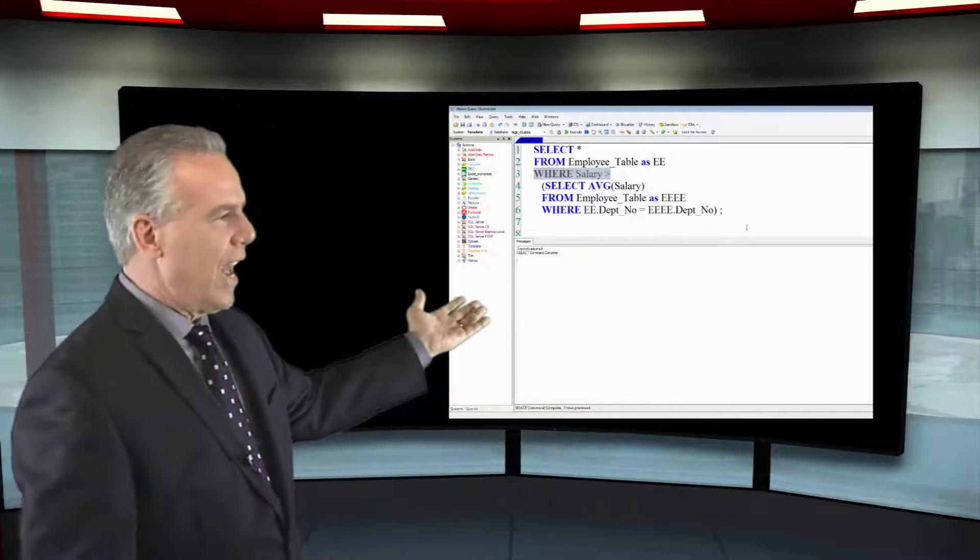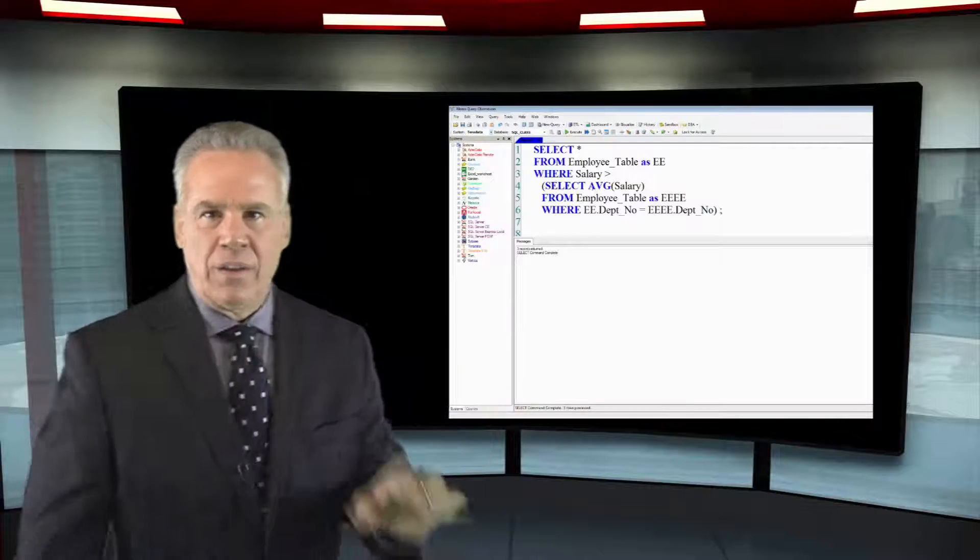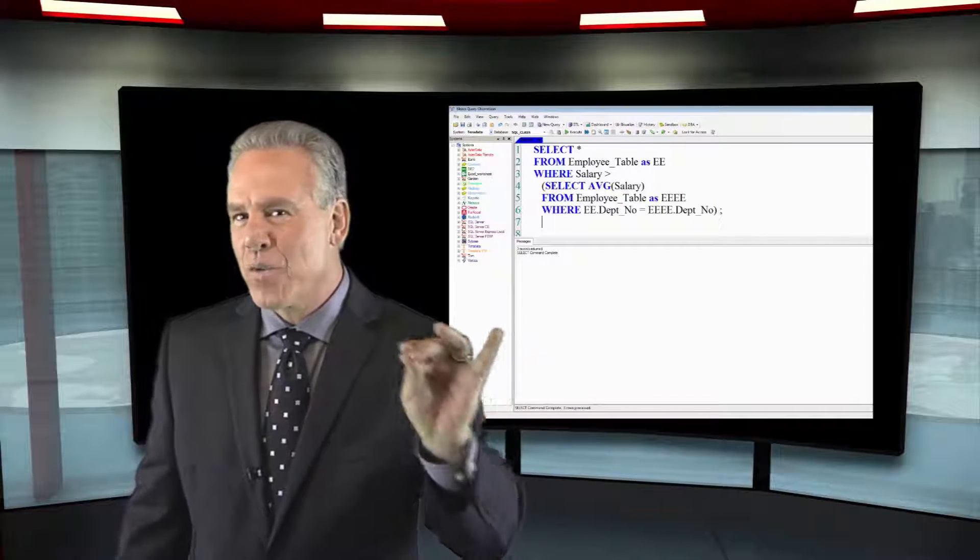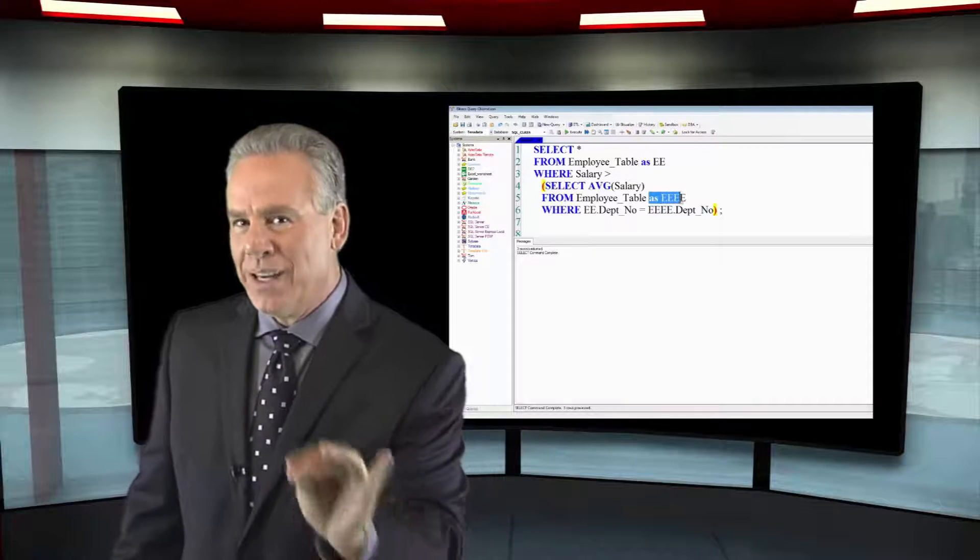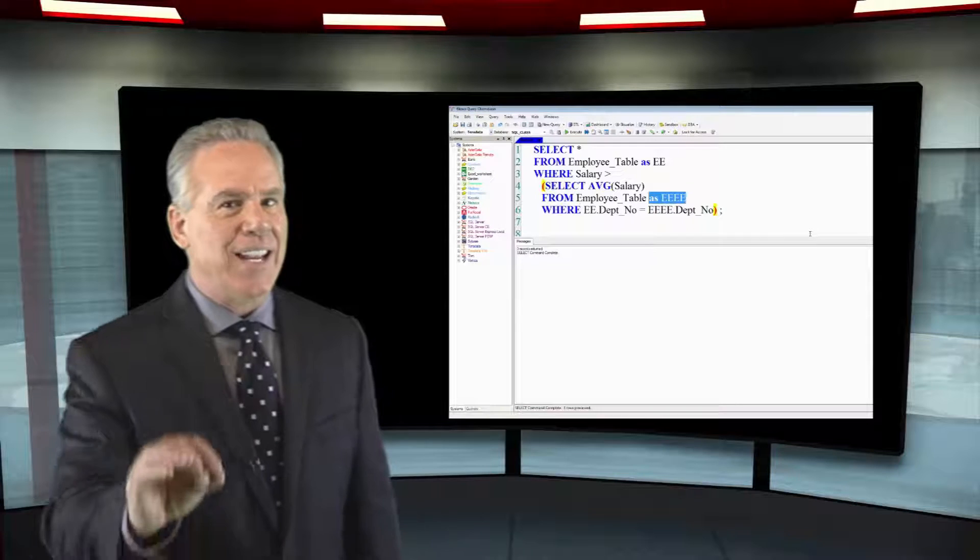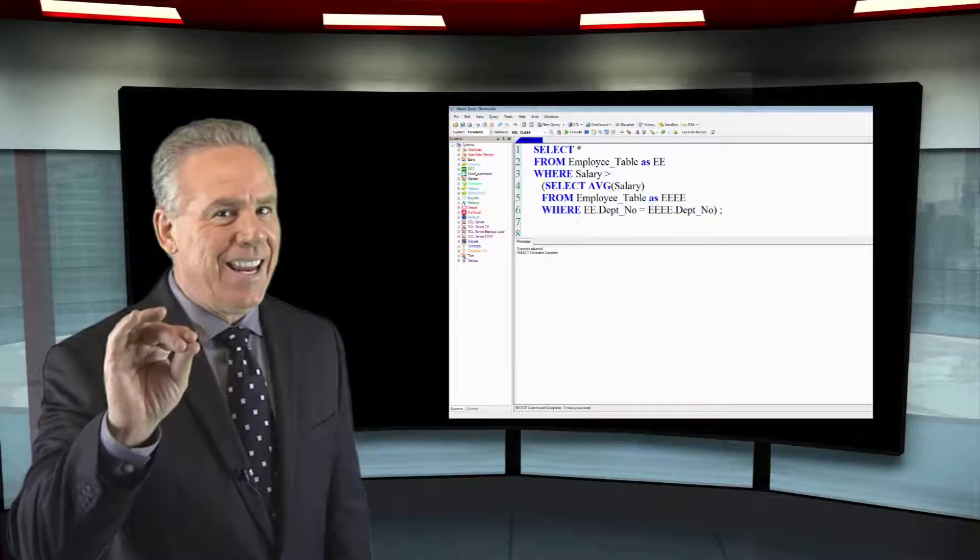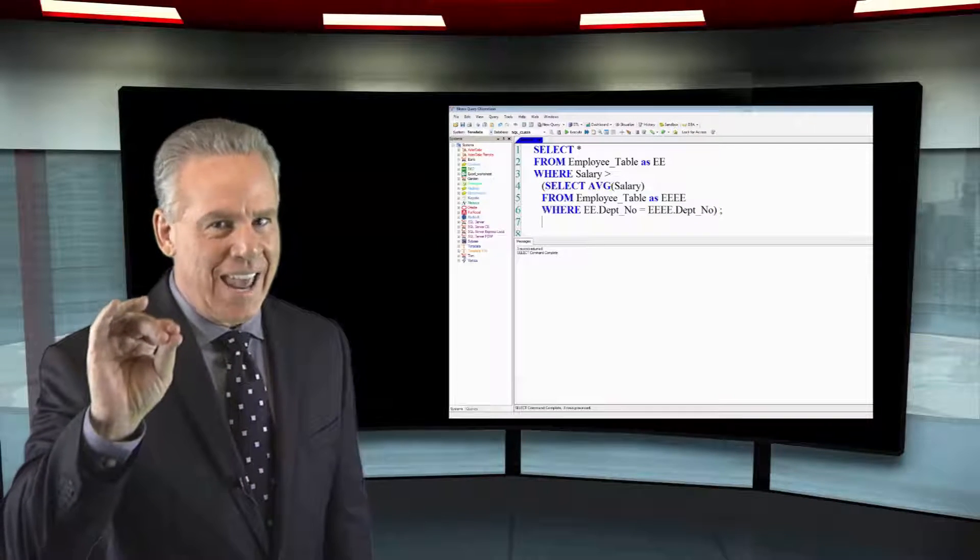Where the salary is greater than, open paren, select the average salary from, once again the employee table as EEEE, so I've given it a different alias.